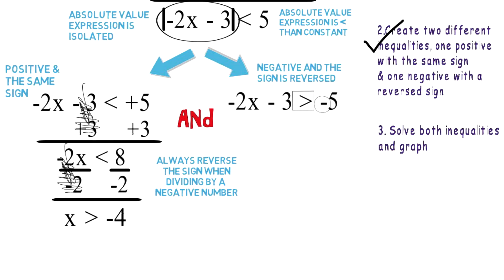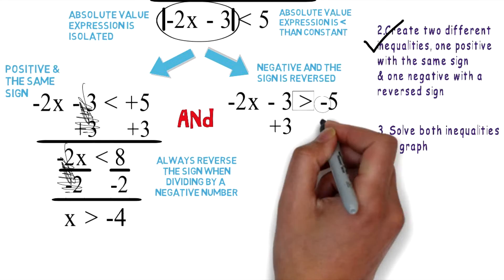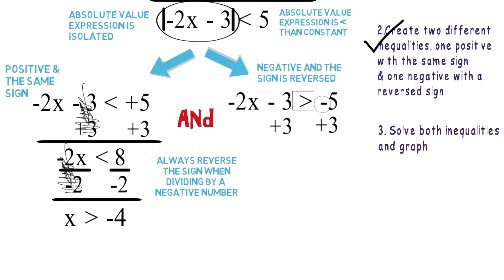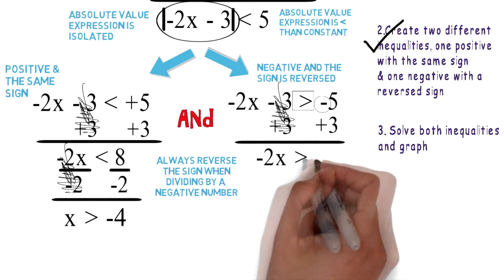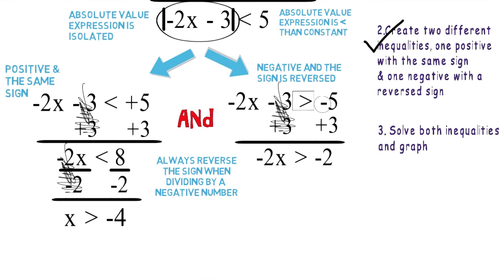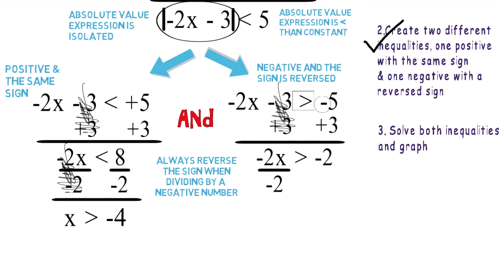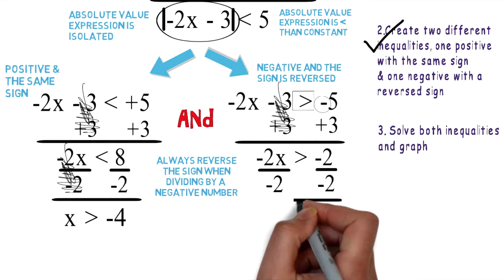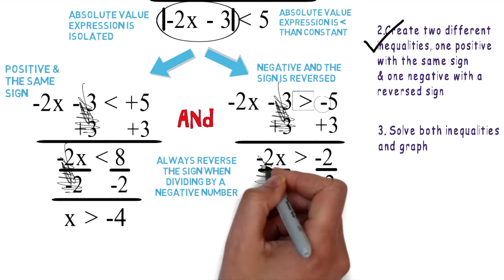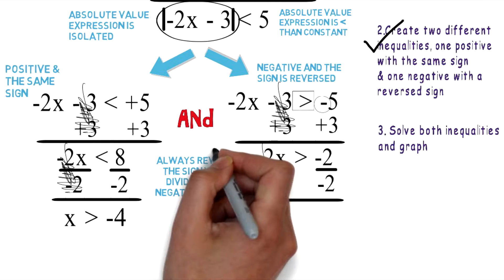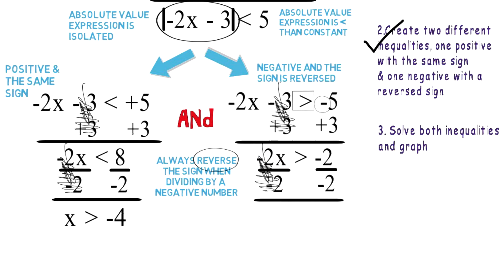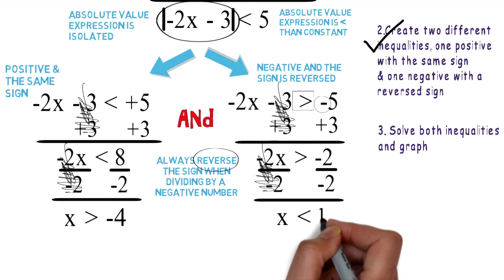On the other side, we want to add three to both sides of the equation. Positive three and negative three will cancel each other out. Now you have negative two X is greater than negative two. Divide negative two from both sides of the equation. These two cancel out. And again, reverse the sign. Now you're left with X is less than one.